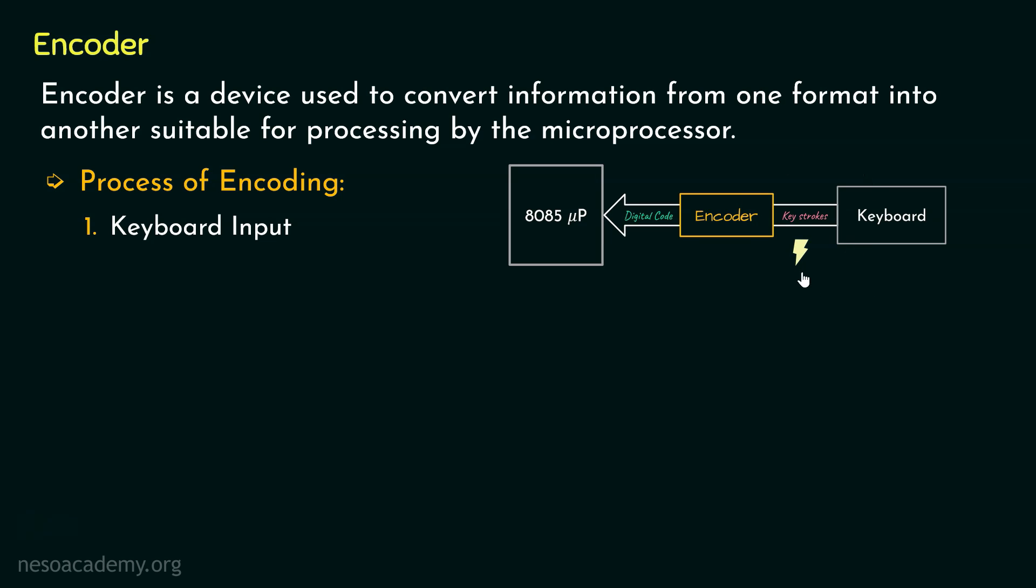Now after this, the functioning of the encoder will take place. Here the encoder, which is a dedicated integrated circuit, receives the electrical signal and converts that into a digital code. This digital code represents the key which was pressed on the keyboard. The encoding process involves assigning a unique binary code to each key of the keyboard.